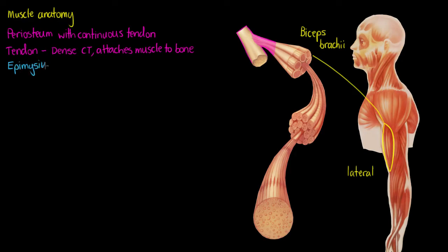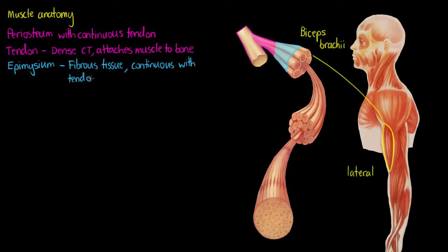The next feature extending out from our tendon is the epimysium. Epimysium itself means 'outside muscle,' so you can remember it as the outermost layer of connective tissue surrounding the body of the muscle itself. It's made of dense irregular connective tissue, and it's continuous with our tendon and even sometimes blends in with the fascia separating your neighboring muscles. We have that epimysium shown in blue here.